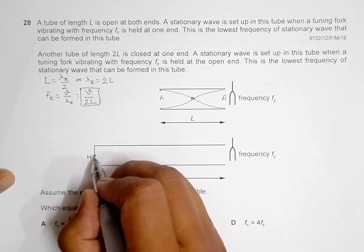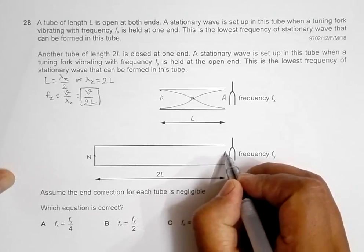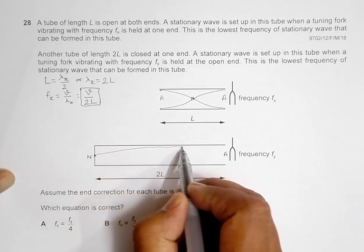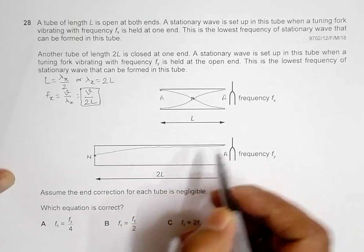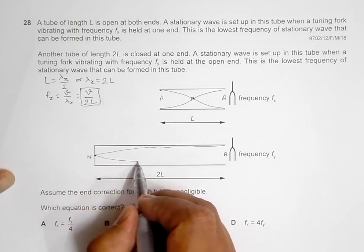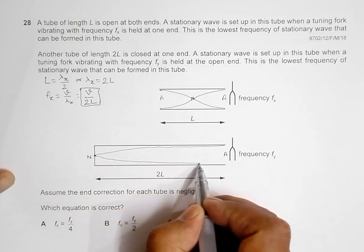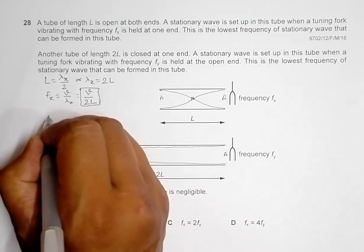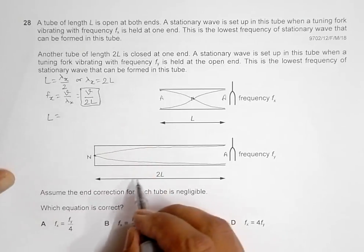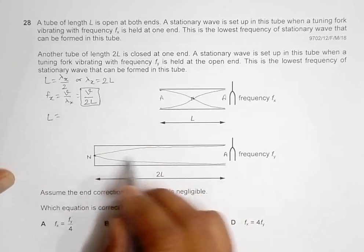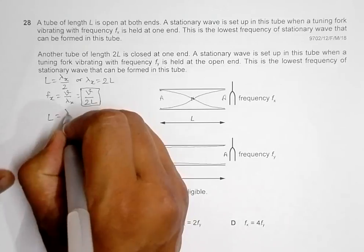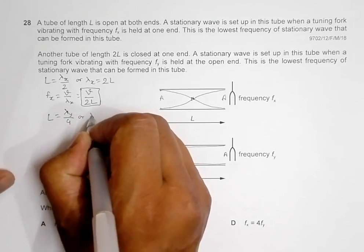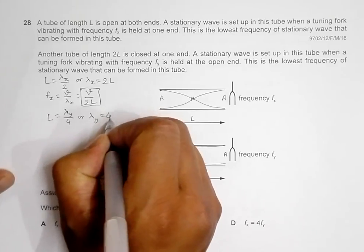Since it is the fundamental frequency, what we must have is a node at the closed end and an antinode at the open end. So the wave formed is somewhat like this. This whole length accommodates one quarter of the full waveform, so that is λy divided by 4, which gives λy equal to 4 times 2L, so λy equals 8L.